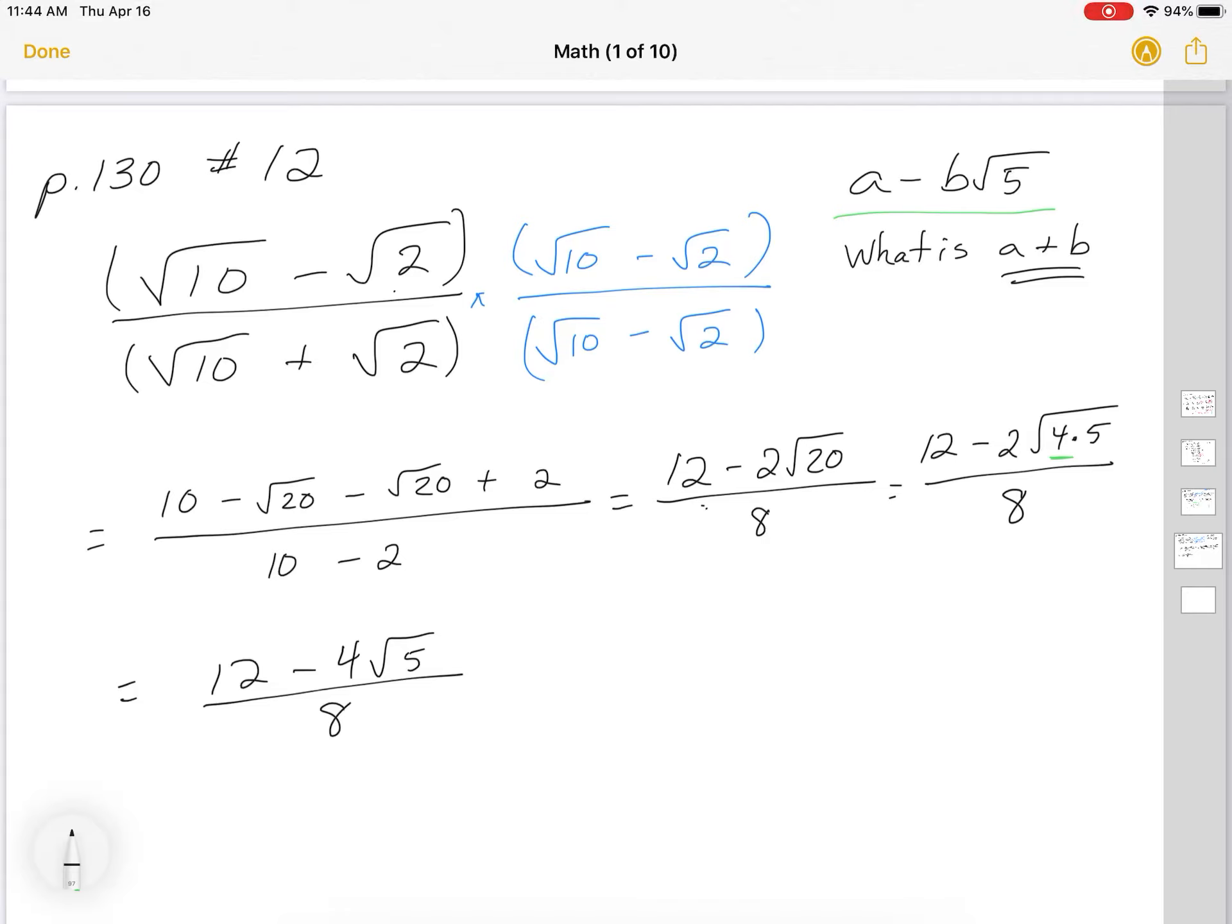Now I can simplify this further. This is the same as 12 over 8 minus 4 over 8 root 5. So we're just basically dividing each of these terms by that 8. We've split them up. 12 over 8 is the same as if I divide the top and the bottom by 4. So I get 3 over 2.